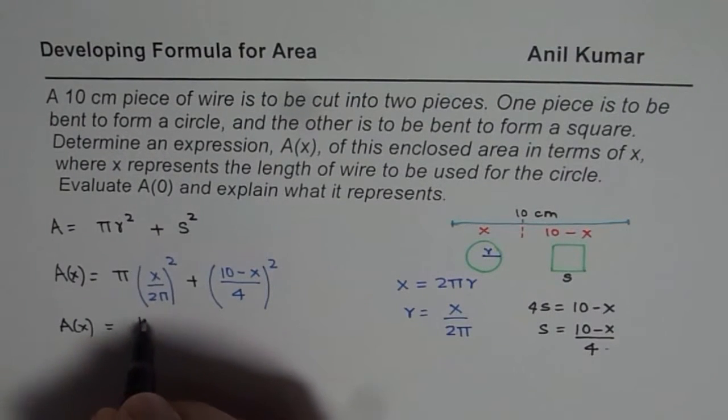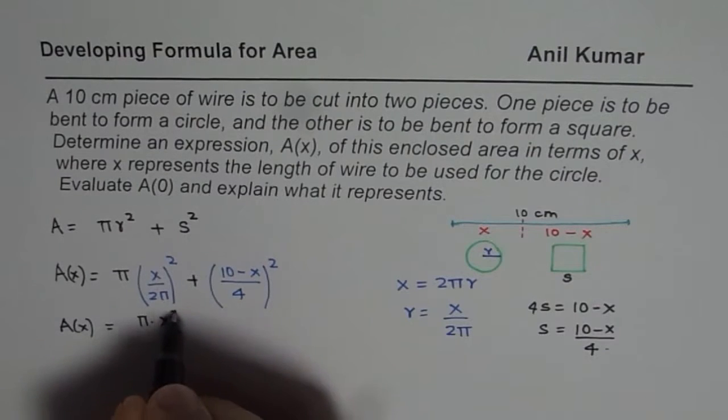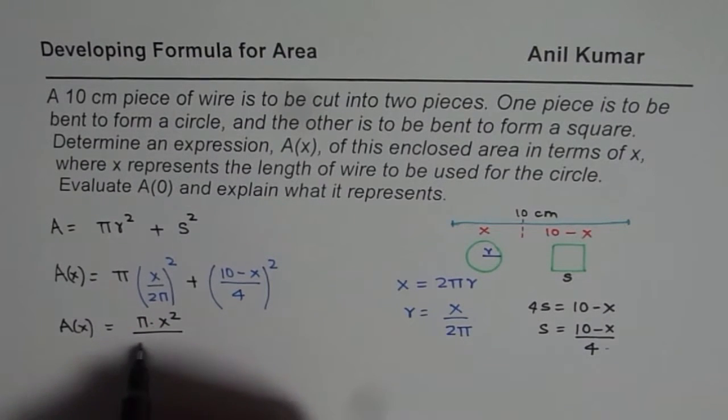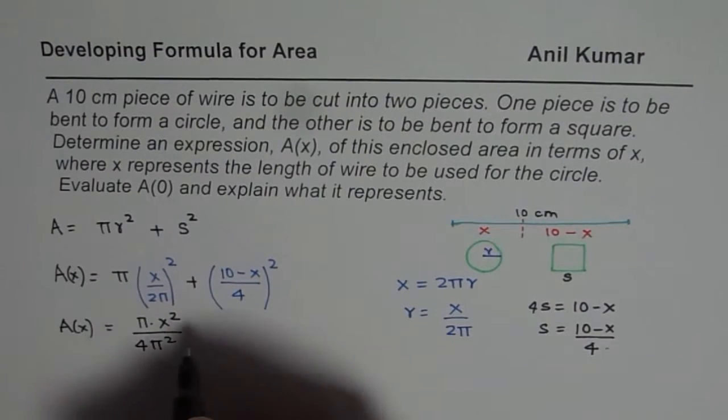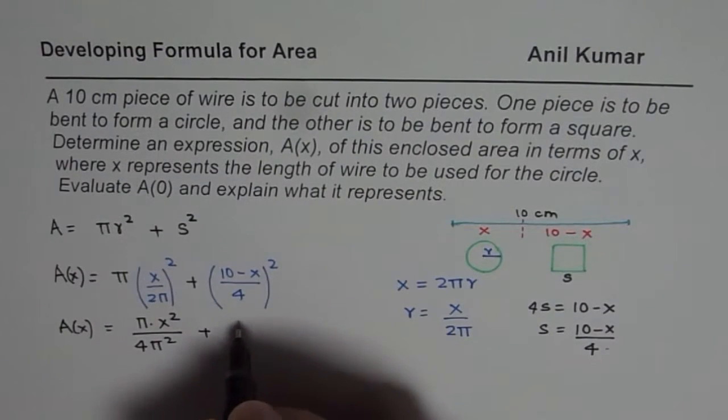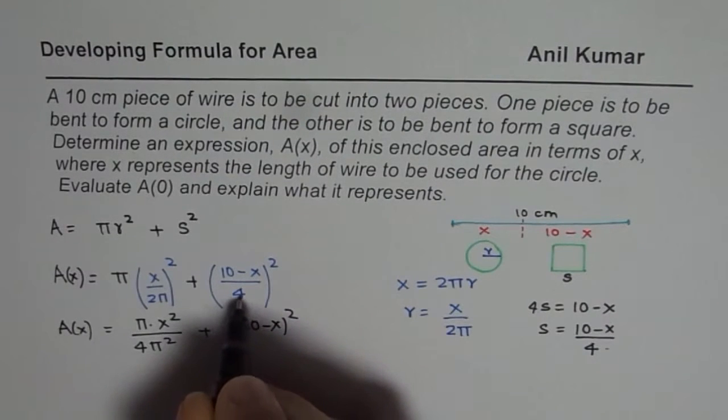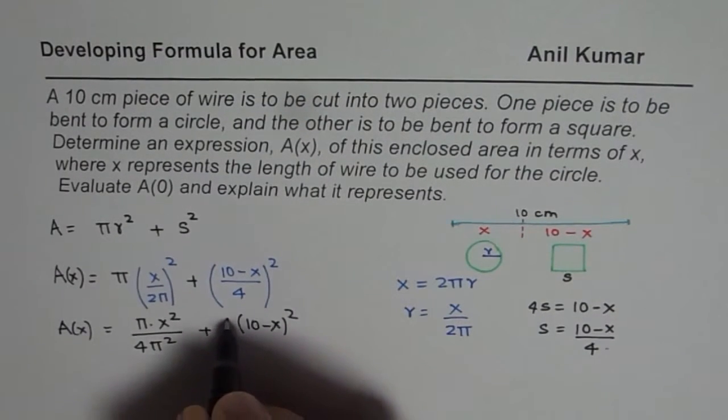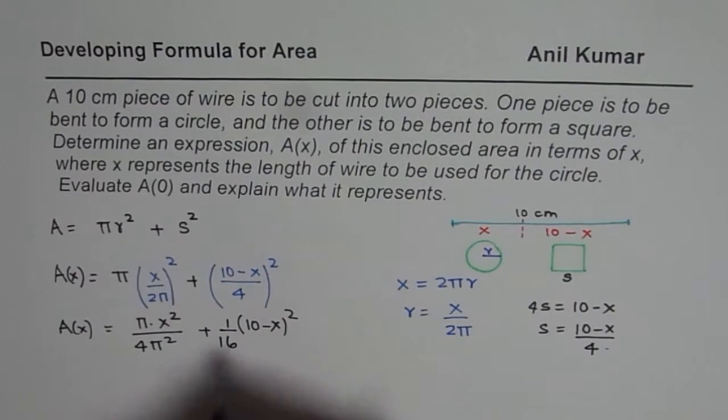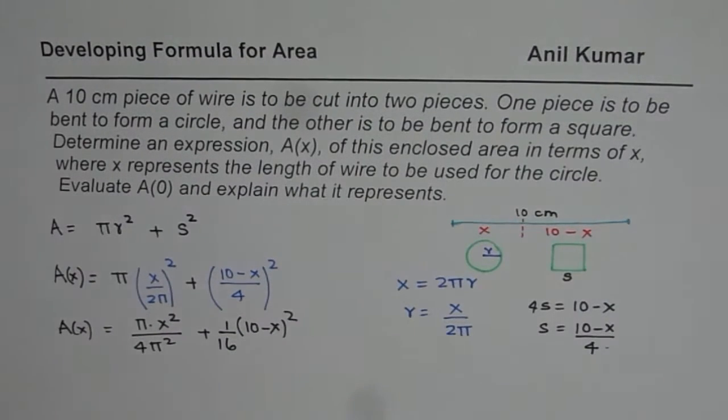When you simplify, you get π times x² divided by 4π². Plus, we could write this as (10-x)² divided by 4 square which is 16. So 1 over 16. So that is how you could write your expression. And you can now further simplify this.